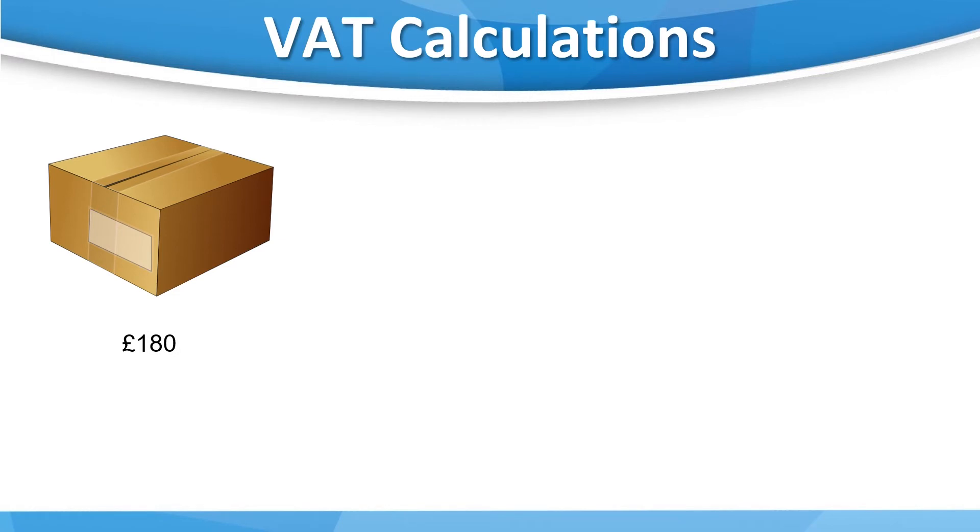To find the VAT amount from the gross amount we can't simply multiply by 20%. If you tried this you'd get £36, which isn't the amount of VAT we calculated before. Instead, you must remember that the £180 is made up of 100% net price of the goods plus 20% VAT, making a total of 120%. So to find the VAT amount we need to divide the gross amount by 120, and then multiply by 20, because the VAT rate is 20%. The answer is then £30, which you'll remember is the amount we calculated earlier.